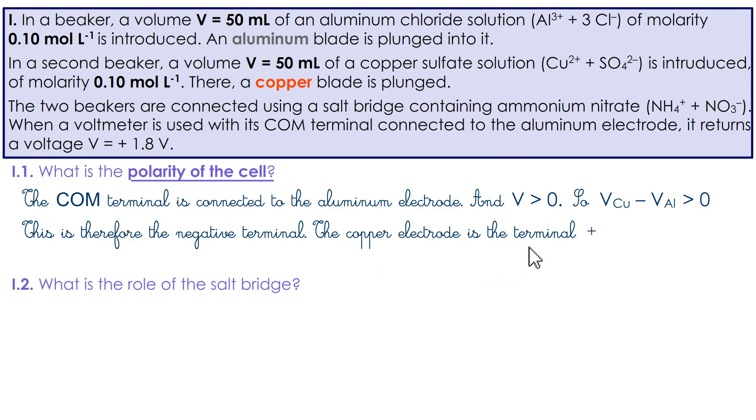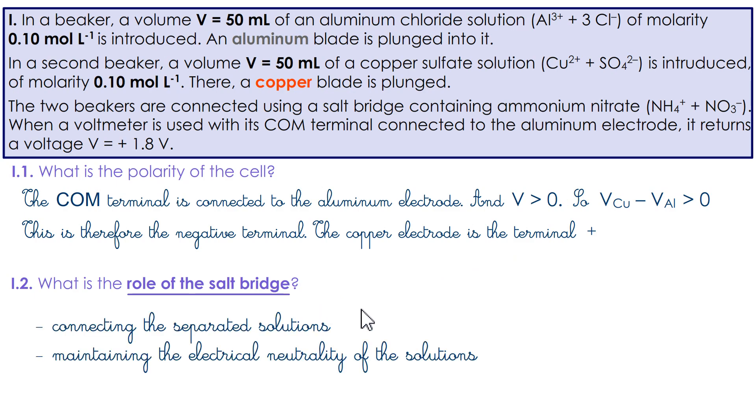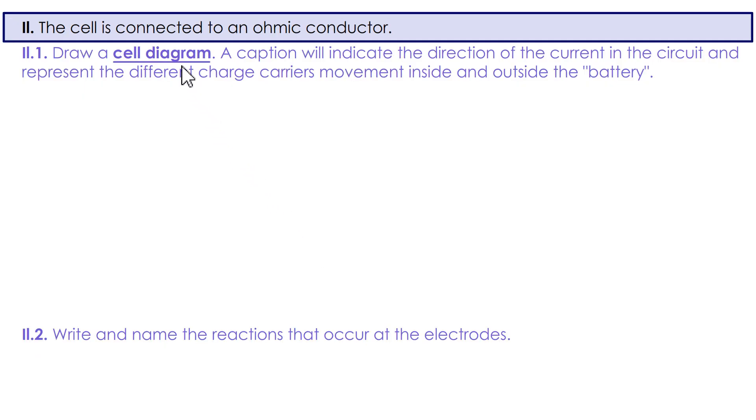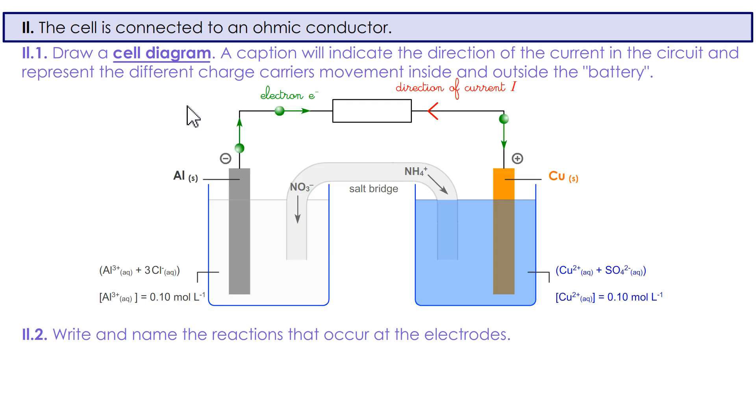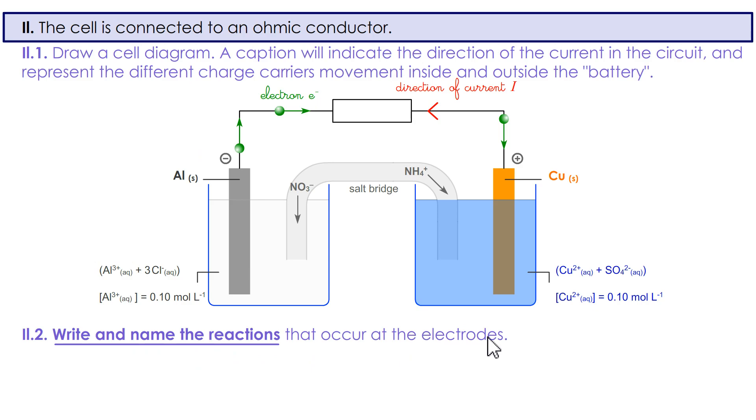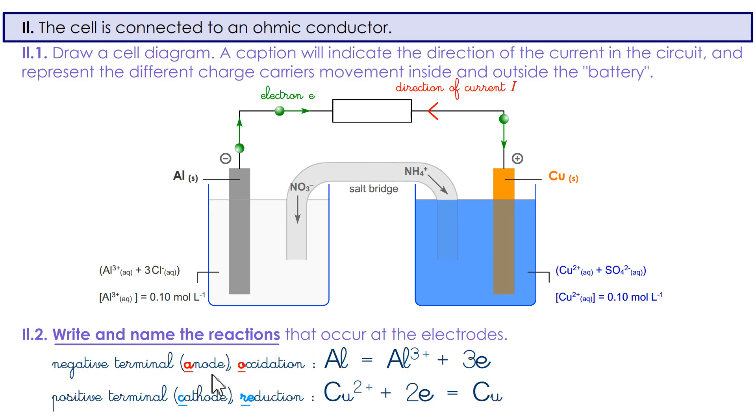The role of the salt bridge. We just talked about it. You're asking for a diagram. Here, aluminum replaces zinc. Write and name the reactions that occur at the electrodes. Oxidation at the anode. Vowel, vowel. Reduction at the cathode. Consonant, consonant. The polarities, the plus. And the minus.